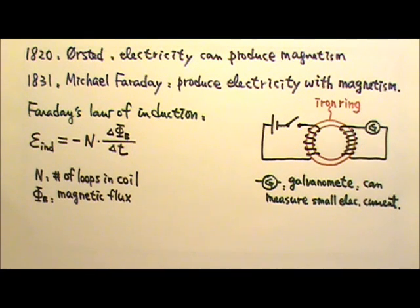More specifically, to produce an induced current, what we need is a change in this thing called magnetic flux. Faraday's law of induction says the induced EMF equals negative N times delta phi B over delta T, where N is the number of loops in a wire coil. Phi B is called magnetic flux.